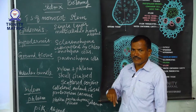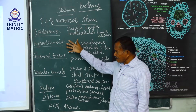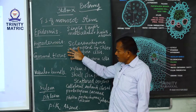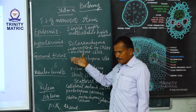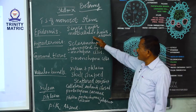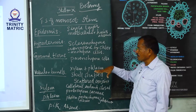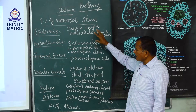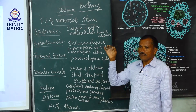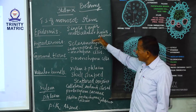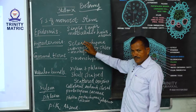In the previous class we studied the dicot stem: epidermis, cortex — which is distinguished into three layers — endodermis, pericycle, vascular bundle, and pith. There is no ground tissue in the dicot stem. In the monocot stem, there is no cortex, no endodermis, and no pericycle.